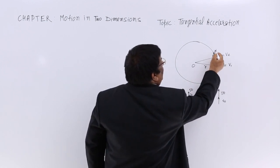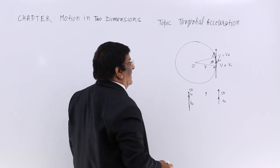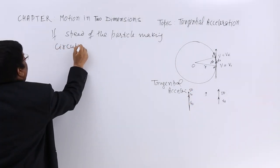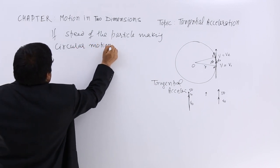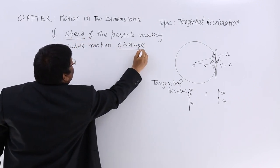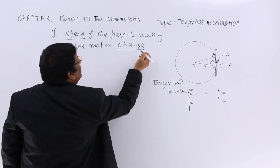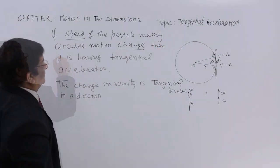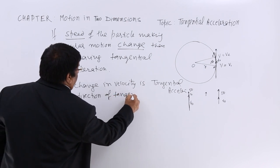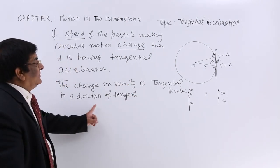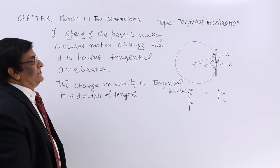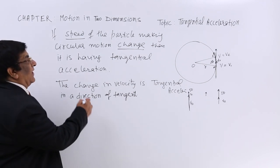This acceleration is in the direction of the tangent of this circle, so this acceleration is known as tangential acceleration. If the speed of the particle making circular motion changes, then it is having tangential acceleration. The change in velocity is in the direction of the tangent, so this is tangential acceleration — its direction is along the tangent.